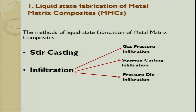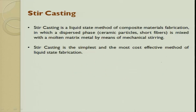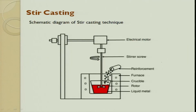Now let us look at stir casting and infiltration. In infiltration you can have gas pressure infiltration, pressure die infiltration, and squeeze casting infiltration. First is the stir casting process. The majority of researchers who work in metal matrix composites for various applications try to use the stir casting process. If you want to develop a setup it is very economical.